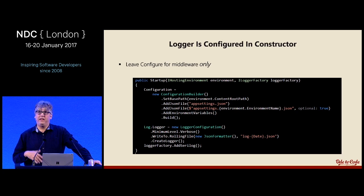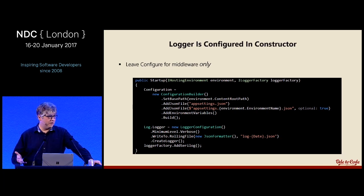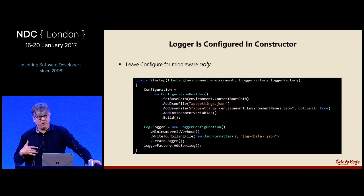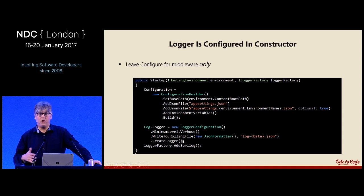A lot of ASP.NET Core examples will do logging configuration inside Configure, right before all the middleware is configured. To me that always makes no sense — the Configure method is for middleware. I usually move all logging configuration into the constructor for the startup class: set up configuration, put in the different JSON files you need, then configure the logger right away so it's ready to go throughout the rest of the startup file.